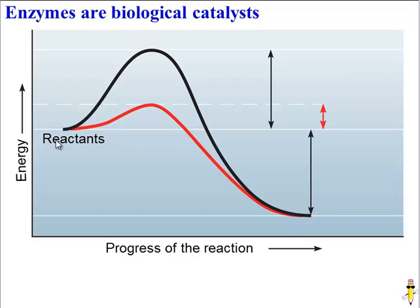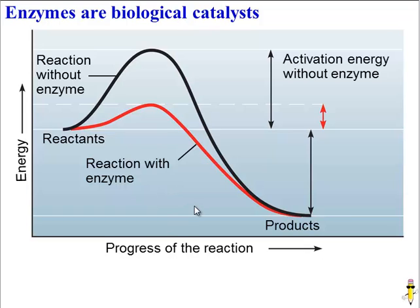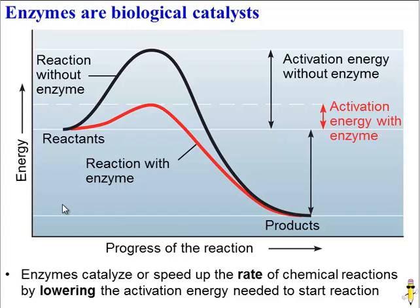Here are the reactants, the starting materials. Here are the products, what forms at the end of the reaction. Here is a reaction without an enzyme, and here is a reaction with an enzyme. As you can see, there's a big difference in the amount of energy needed to get the reaction going — that energy is called the activation energy. All chemical reactions need a little boost to get started, and the significant thing about enzymes is that if an enzyme is around, the reaction doesn't need as much activation energy, and thus it will happen faster. So the bottom line is that enzymes catalyze, or speed up, the rate of chemical reactions by lowering the activation energy needed to start the reaction.